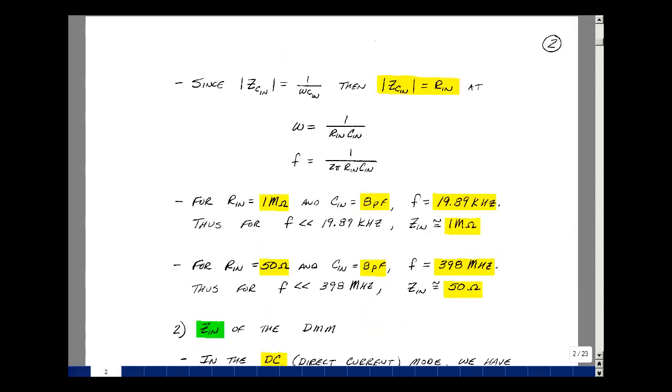The impedance of a capacitor is 1 over j omega C. In this case, we're talking about C equal to C-in, and the magnitude of that would just be 1 over omega C-in. When is that equal to the value of R-in? We're just going to equate those two. Bring the R-in over here and the omega over here, and so we have that omega is 1 over R-in C-in. Divide by 2 pi, and we would have the frequency where that's true. If you had a 1 megaohm resistor and 8 picofarads, this frequency would be about 20 kilohertz.